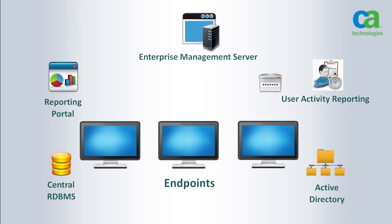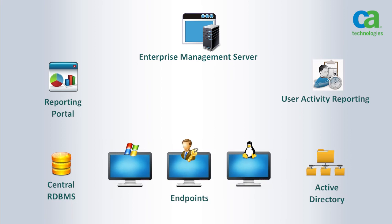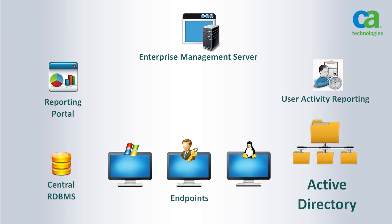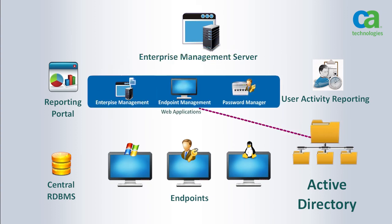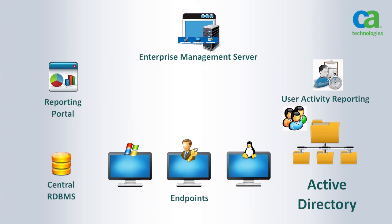These resources are protected by policy for three types of endpoints. One more key, albeit optional, component of CA Control Minder's architecture is Active Directory. CA Control Minder can also connect to Active Directory and use the groups and users that are defined there, meaning you can use a single data store for all your users.